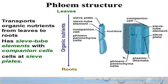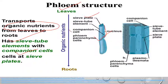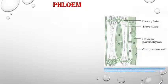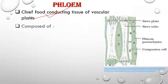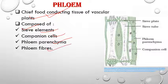Next is phloem. The main function of phloem is transportation of organic nutrients — food material — from leaves to roots and all parts of the plant. Phloem is made up of: sieve tube elements, companion cells, phloem parenchyma, and phloem fibers. Companion cells are absent in pteridophytes and gymnosperms, and phloem fibers are absent in primary phloem of many angiosperms.